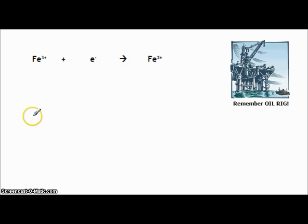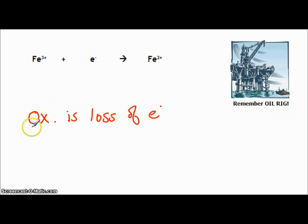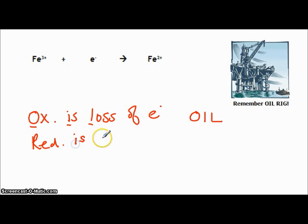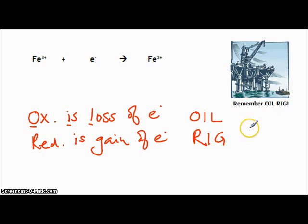When it comes to redox reactions, some of the most basic definitions: firstly, make sure you remember that oxidation is the loss of electrons. A little acronym: OIL — oxidation is loss. Reduction is defined as the gain of electrons — OIL RIG. That mnemonic is helpful to remember those basics: oxidation is losing electrons, reduction is gaining electrons.